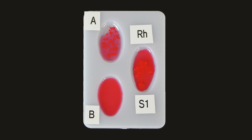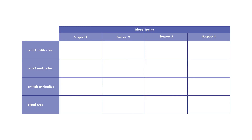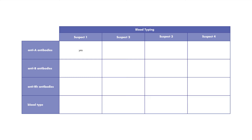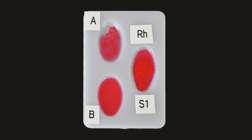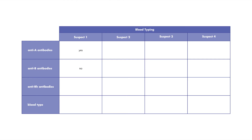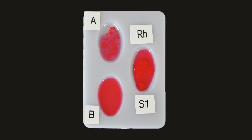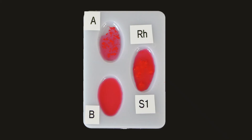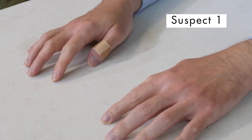Let's examine the results and compile them in a table. The blood cells in well A are sticking together, so we write yes on our table for anti-A antibodies. The cells in well B show no reaction, so we write no for anti-B antibodies. The blood cells in the Rh well are also sticking together, so we write yes for Rh antibodies. Based on this information, blood that reacts to anti-A antibodies but not anti-B antibodies is type A blood. Since the blood also reacted to Rh antibodies, it is type A positive. Because his blood does not match the blood found at the scene of the crime, suspect 1 is probably not the one who took the sandwich.